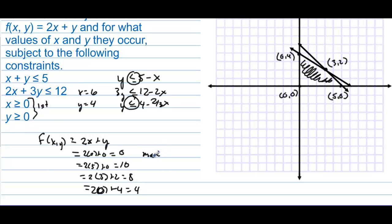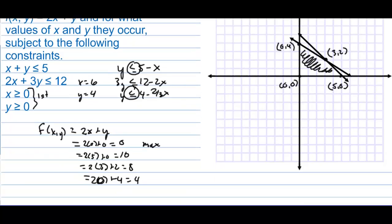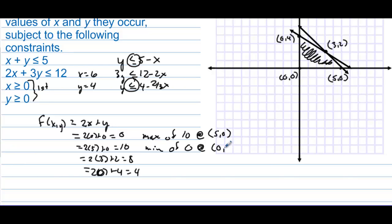So we have a maximum. The maximum value is 10, occurring at the point (5, 0). And the minimum value is 0, occurring at the point (0, 0).